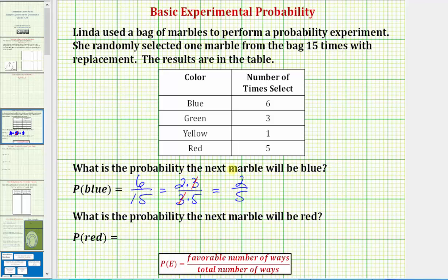So the probability the next marble will be blue is 2/5. Now probability can also be expressed as a decimal and a percentage, but in this case we are asked to express the probability as a simplified fraction.